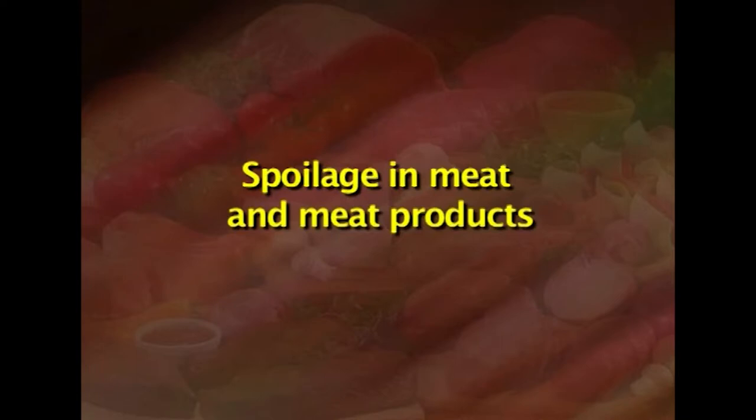Coming to spoilage of meat and meat products: meat is an ideal culture medium for many organisms because it is high in moisture, rich in nitrogenous food of various degrees of complexity, and plentifully supplied with minerals and accessory growth factors. The majority of spoilage microorganisms are contaminants which come from external sources during unhygienic bleeding, handling, and processing.